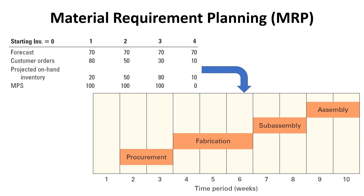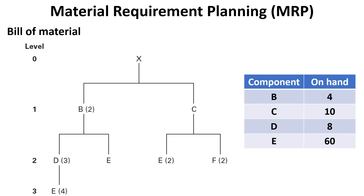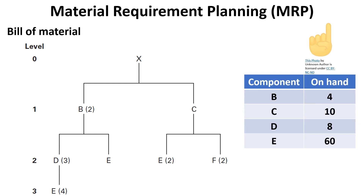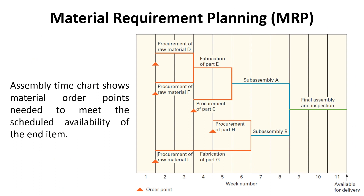To make MRP, it is required to know the required number of items to assemble a certain number of end items. This can be achieved using the product structure tree and the quantity on hand from each item from the inventory record, as explained in the previous video. If you would like to watch that video, click on the above link. The next step to develop the MRP is to construct the assembly time chart to show material order points needed to meet the scheduled availability of the end item.